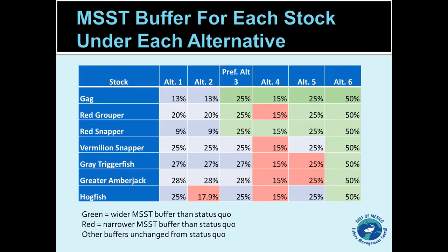The remaining alternatives — four, five, and six — would set the minimum stock size threshold at some fixed proportion of BMSY: either 85%, 75%, or 50%, going from most conservative to least conservative. Alternative four, the most conservative in this list, would set everything at a 15% buffer. For gag it would widen from 13% to 15% and for red snapper from 9% to 15%, but for everything else it would narrow the buffer — stocks currently at 20–28% would go down to 15%.